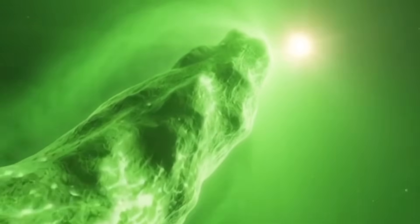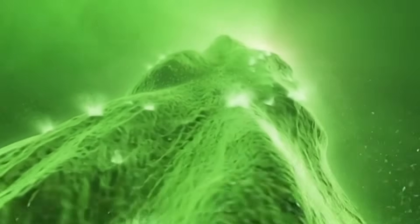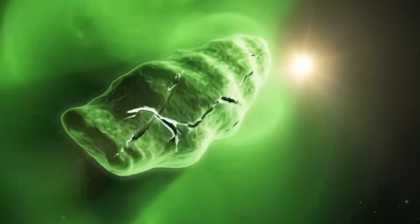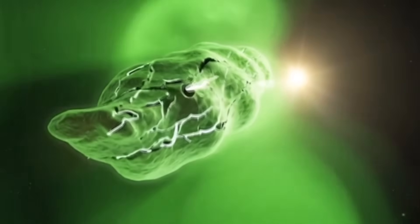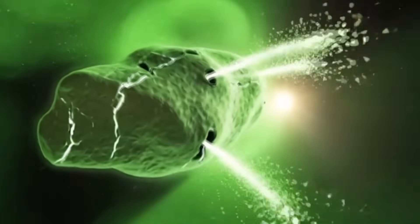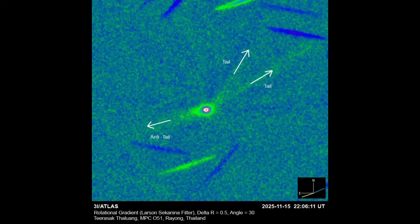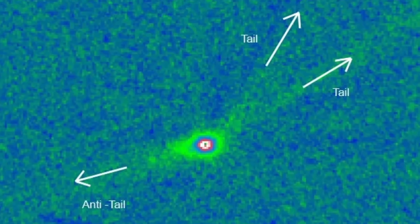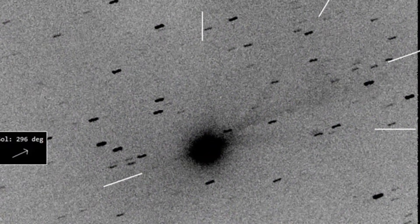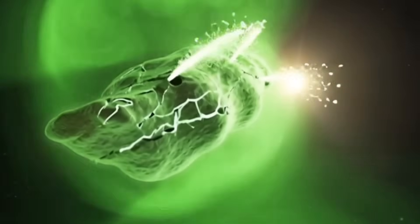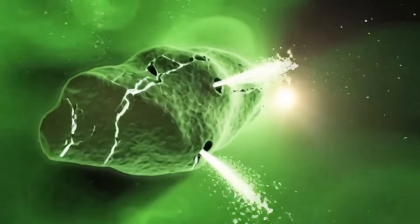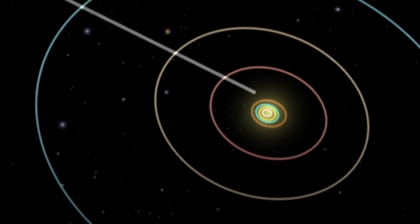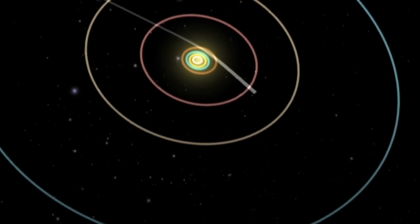Loeb suggests that during its journey, 3i Atlas might be using its jets not as normal cometary outgassing, but as thrusters, guiding itself with remarkable accuracy toward a precise point near Jupiter. He points to images showing multiple jets on 3i Atlas after its closest approach to the Sun. Those jets could be thrusters carefully used to fine-tune its trajectory. The best time to do this would be near perihelion anyway, because that's when a craft could use the Sun's gravity to its advantage.